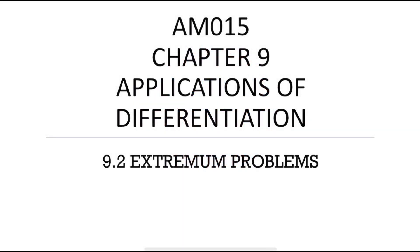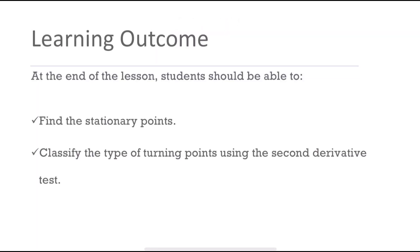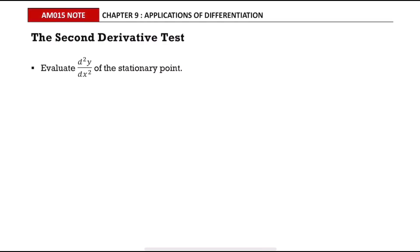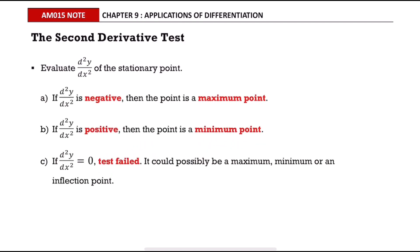In this video we are going to continue about extremum problems. This is the learning outcome: we will use the second derivative test to determine the nature of a stationary point. In this test, we evaluate the second derivative at the stationary point. If the second derivative is negative, the point is a maximum point. If the second derivative is positive, the point is a minimum point.